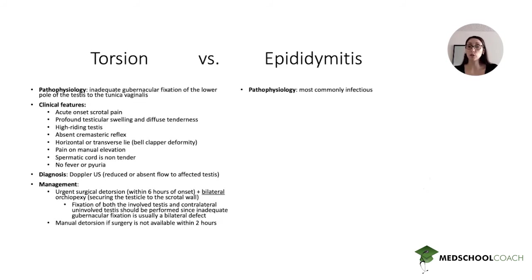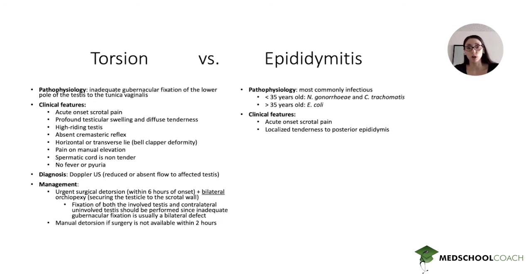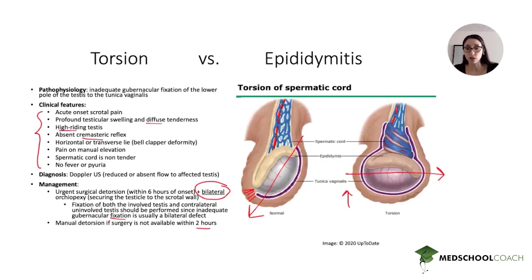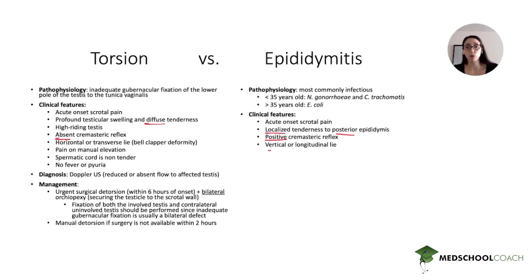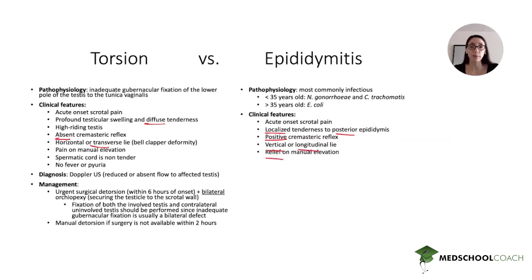Now let's compare with epididymitis. The pathophysiology is most commonly infectious. In younger patients under 35, it's typically gonorrhea or chlamydia; in older patients, E. coli and other enteric gram-negatives. Clinical features also include acute onset scrotal pain, but here the tenderness is more localized to the epididymis, which is posterior on the testicle. The cremaster reflex is positive in epididymitis, whereas in torsion it is absent. The testicle remains in a vertical or longitudinal lie — it doesn't twist into the horizontal position seen with torsion.